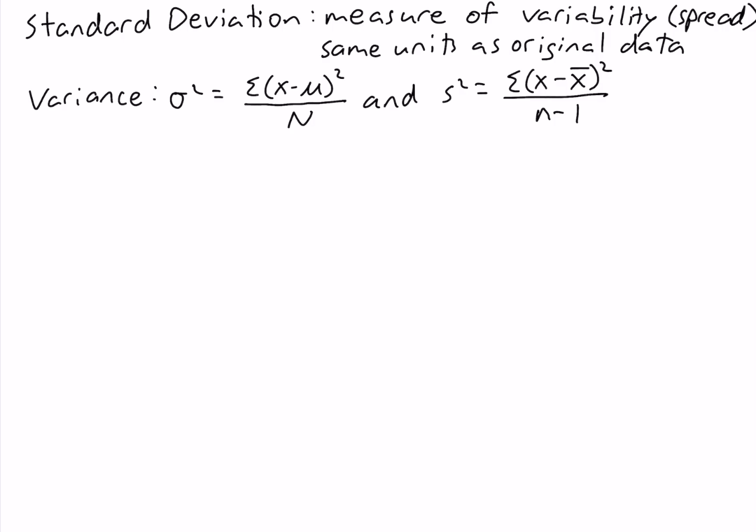So for example, if our data is in inches the variance is going to be in squared inches. If the data is in pounds the variance is going to be in squared pounds. So the variance isn't in the same units as the original data, but the standard deviation is.